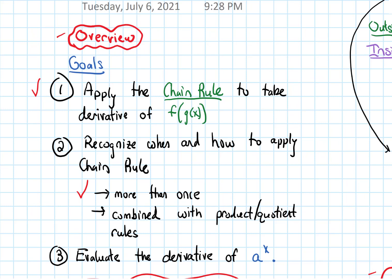In terms of our goals, we've finished the second part of goal 2: recognizing when and how we apply chain rule combined with other rules like the product and quotient rules.